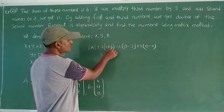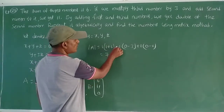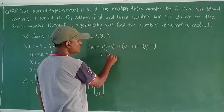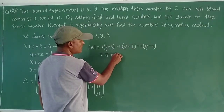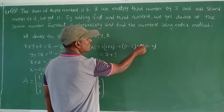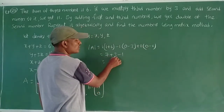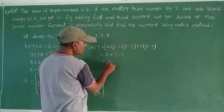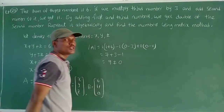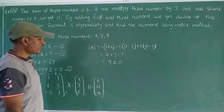That equals 7 plus 3 minus 1 equal to 9. Delta A equals 9, which is not equal to 0. So it is a non-singular matrix.